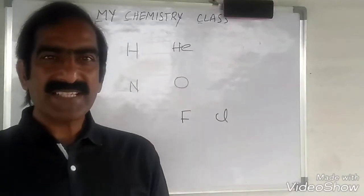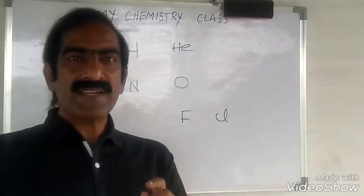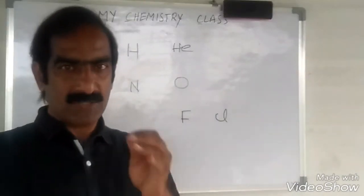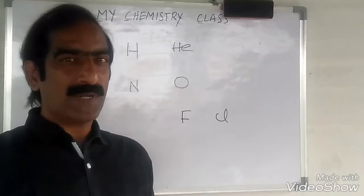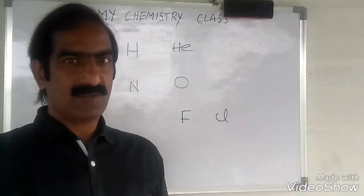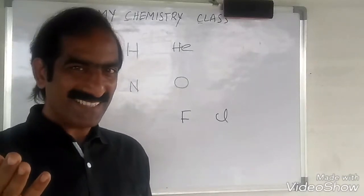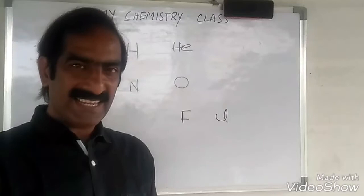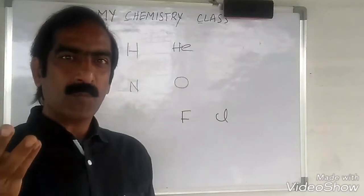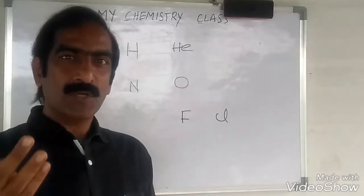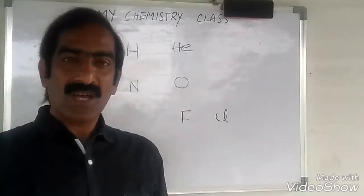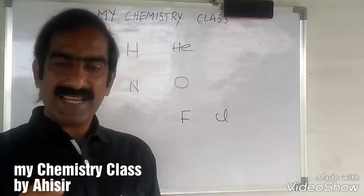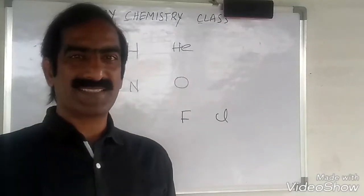Which element exists as dimer? Which element exists as monomer? Have a look. First group elements — Lithium, Sodium, Potassium, Rubidium, Cesium — all these elements are metals and they exist as monomers.